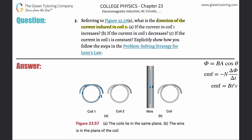This is all about induction. In coil number one, the current is increasing in a counterclockwise direction. Currents produce their own magnetic fields, as we covered in chapter 22. So if the current is increasing, the magnetic field produced by this current is also increasing.